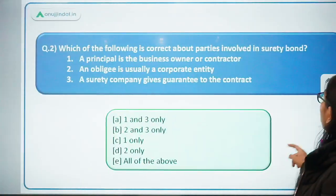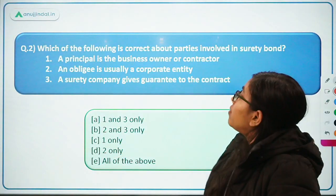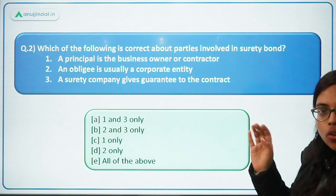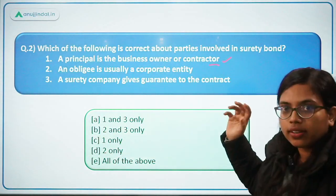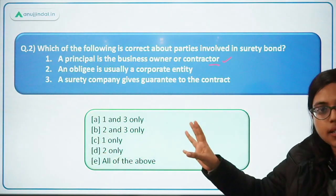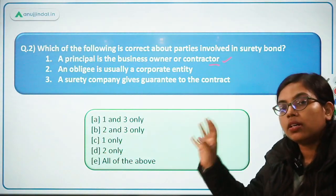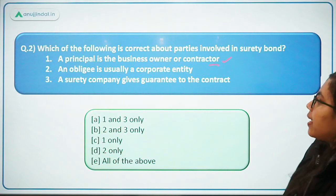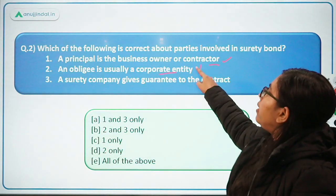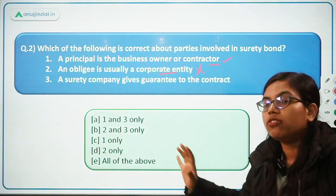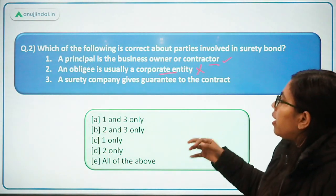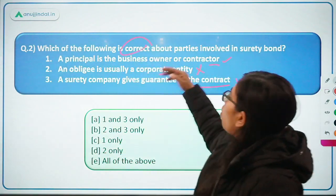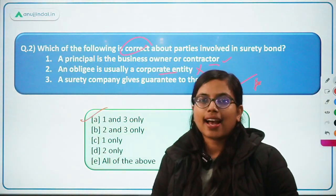Moving forward to the next question: which of the following is correct about parties involved in surety bonds? Statement one — a principal is the business owner or the contractor — absolutely correct; the principal is the person who purchases the surety bond from the insurance company. Statement two — an obligee is usually a corporate entity — no, it will be a government entity. Statement three — a surety company gives guarantee to the contract — absolutely correct. So the correct statements are one and three, making option A the correct answer.